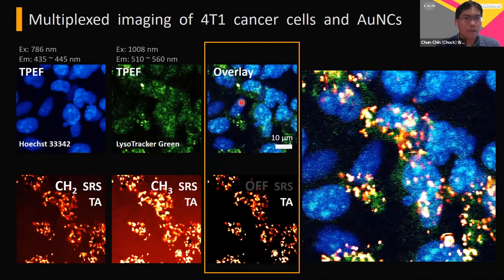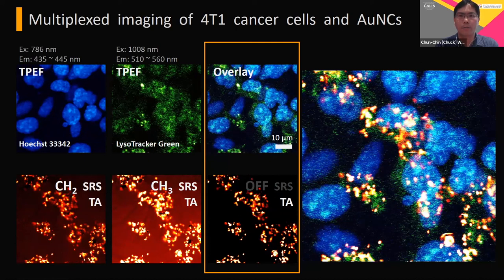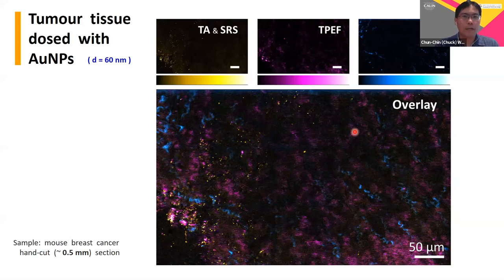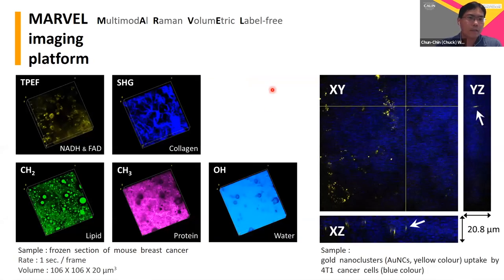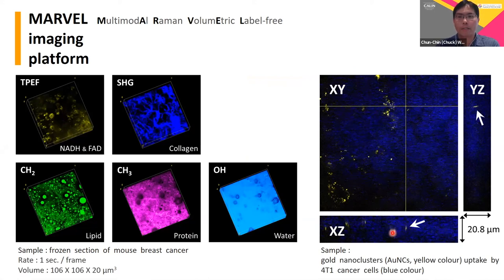We also performed multiplexed imaging to combine two-photon excited fluorescence with other signals. We use a specific fluorescent dye to label the lysosome in the cytoplasmic region. We also demonstrated large-area imaging, which helps us more efficiently pinpoint where the gold nanoparticles are. Our system provides both chemical and structural information with sufficient resolution to determine whether gold nanoparticles have been taken up by the cytoplasm.